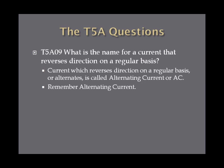What is the name for a current that reverses direction on a regular basis? This is exactly the opposite of direct current. Current which reverses direction on a regular basis, or alternates direction, is called alternating current, or AC. Just remember, alternating current reverses direction on a regular basis.